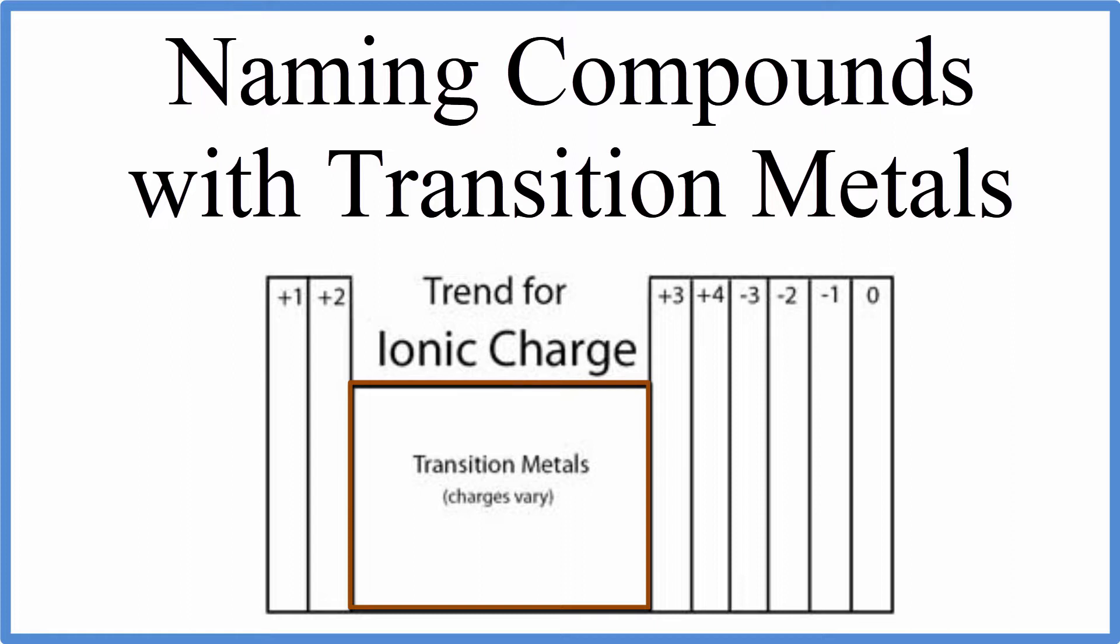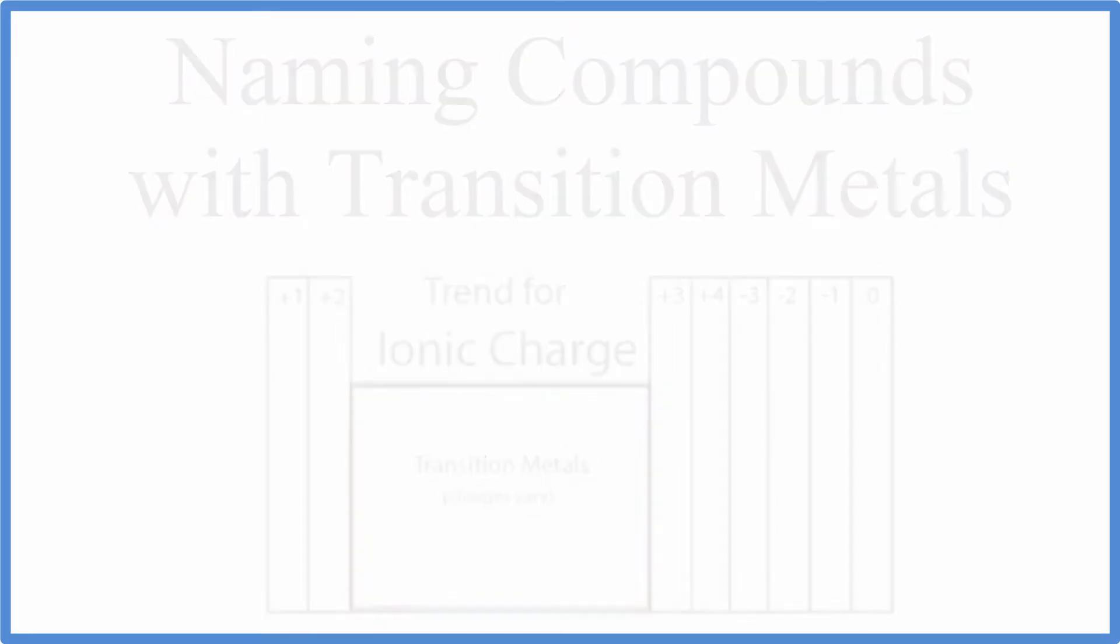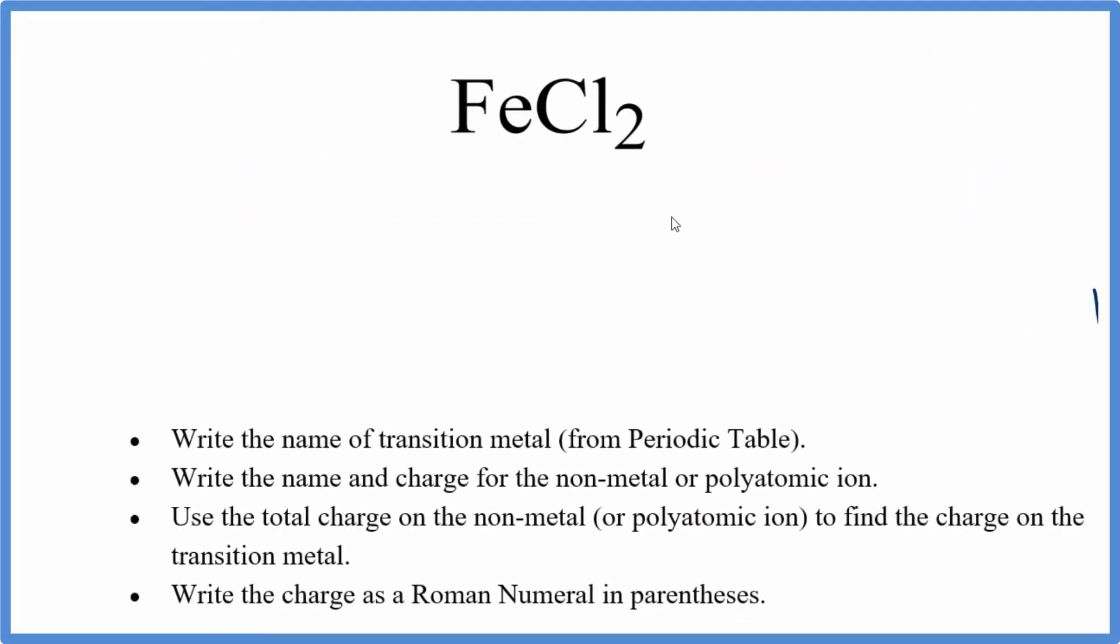Let's try a few examples to make this really clear. We'll start with FeCl2, iron 2 chloride. For FeCl2, we'll write the name of the transition metal. We look that up on the periodic table. It's iron.